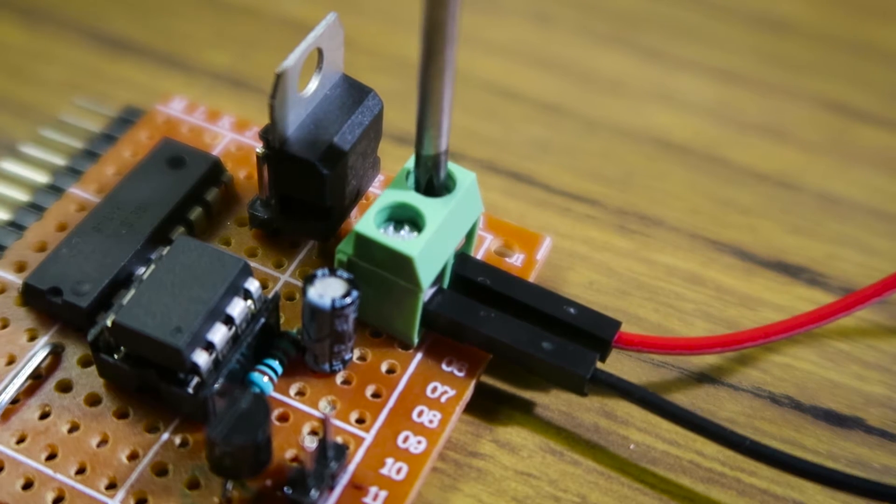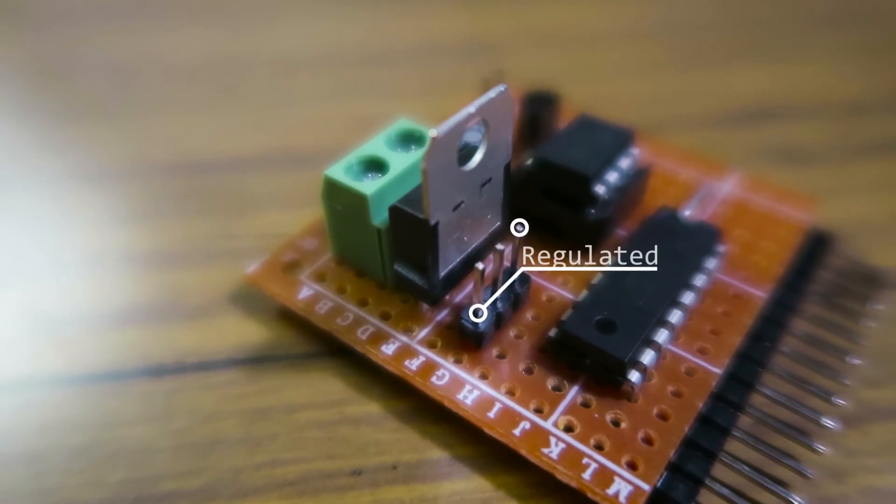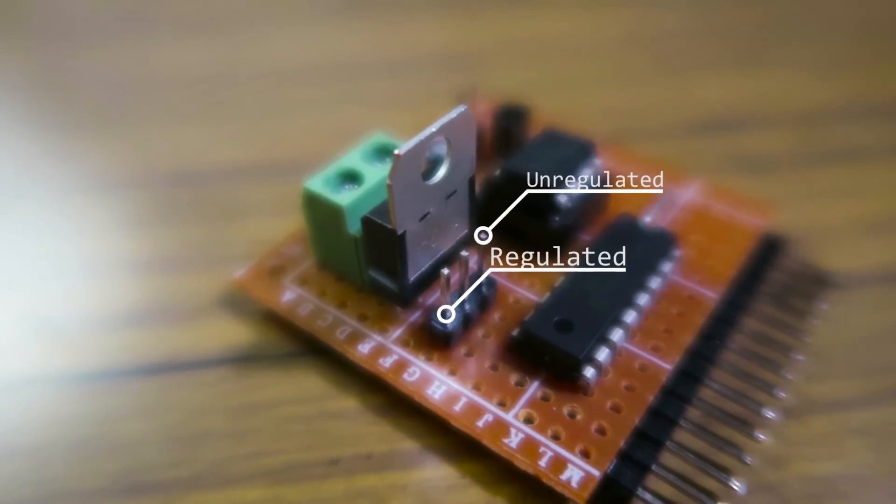I wasn't sure how I was going to power the display, so I added a 5V regulator with a jumper link to bypass it in case I wanted to power it directly from a 5V supply such as a USB port.